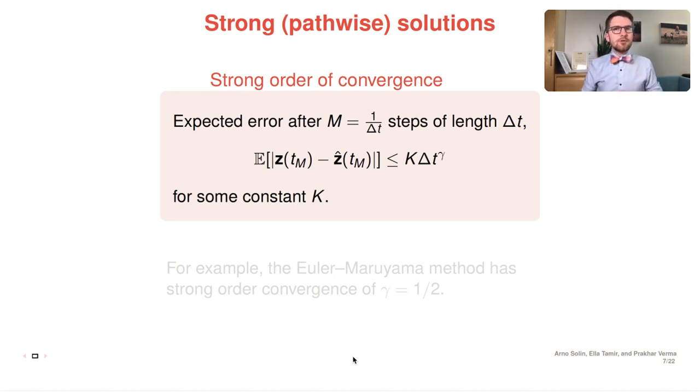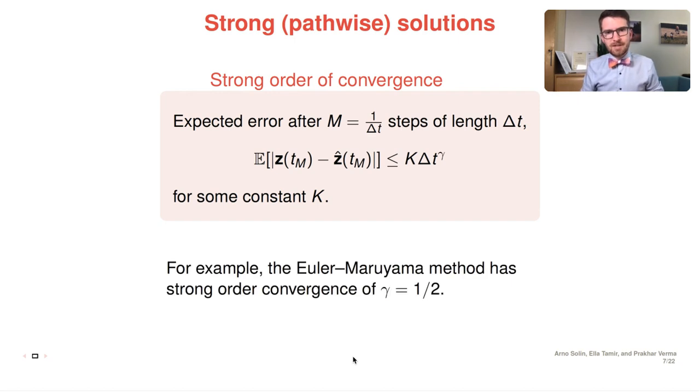However, you need to use a very small step size in order to guarantee that you actually simulate with your approximative simulator, draws that resemble true behavior of a random draw from an SDE. For example, for the Euler-Maruyama method, which is very much used in machine learning, that step size might need to be quite small.